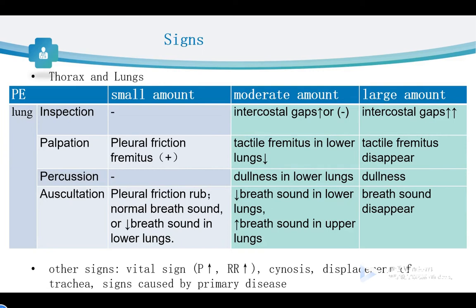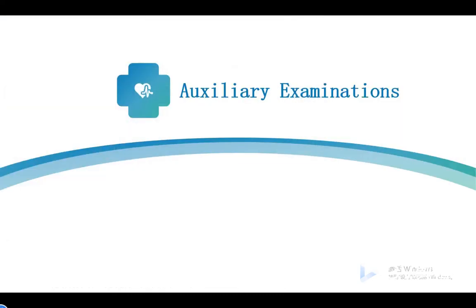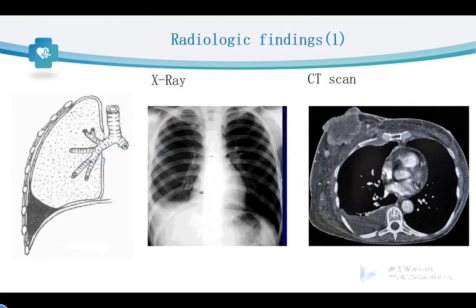Those are the symptoms and signs of patients with pleural effusion. According to these characteristics, we can suspect a pleural effusion and its primary disease. We then need to arrange auxiliary examinations to confirm our diagnosis. First, let's look at the radiologic examinations: we will find special radiologic findings in x-ray, CT scan, or ultrasound examination.